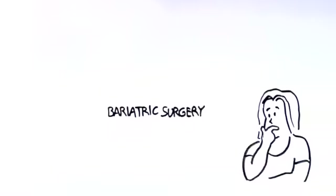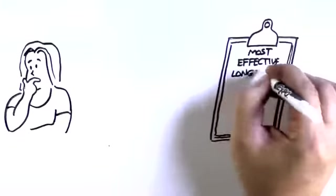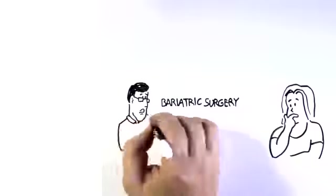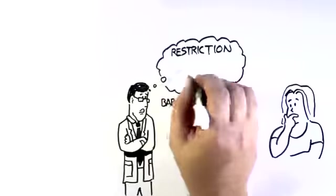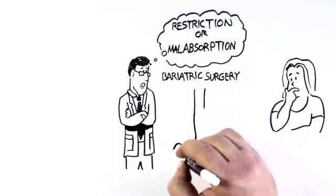One option for Amanda to consider is bariatric surgery. In study after study, it's been shown to be the most effective long-term treatment of obesity. But how bariatric surgery works is often misunderstood. Most people, even many doctors, think of bariatric surgery in terms of restriction or malabsorption. It's a reasonable assumption that surgery would work in these ways.